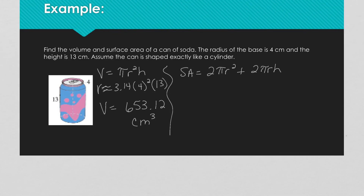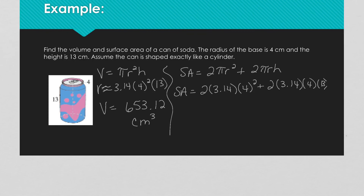Our surface area is 2 times 3.14 times 4 squared plus 2 times 3.14 times 4 times 13. Typing it in, I get that the surface area is approximately 427.04 square centimeters.